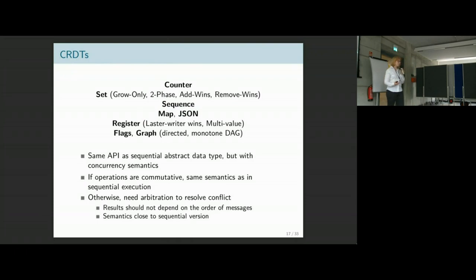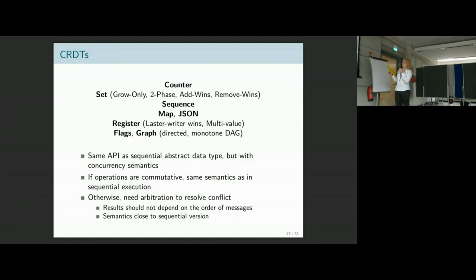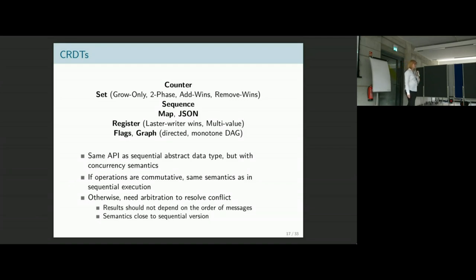Let me give a short introduction to CRDTs. CRDTs are data types extended with some concurrency semantics. The types known from literature and implemented in different systems include counters, sets with different flavors, sequences which give you the possibility to have things in a specific order, maps — one specific instance of which could be considered a JSON CRDT — registers with different flavors, flags, and graphs.